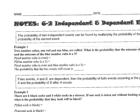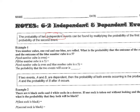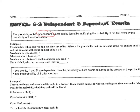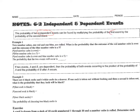For independent events, the probability of two independent events can be found by multiplying the probability of the first event by the probability of the second event. We did individual probabilities yesterday; today we're doing it twice and multiplying those fractions together. For independent events, we set up two fractions, multiply them together, and simplify.